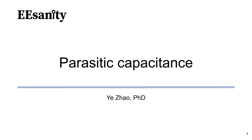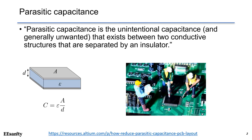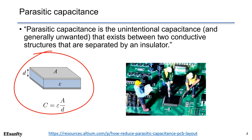In this lecture, we will discuss parasitic capacitance. The definition of parasitic capacitance is the unwanted or unintentional capacitance that exists between two conductive structures that are separated by an insulator. As shown in previous lectures, this is a simple illustration of a capacitor with two plates. The capacitance C equals epsilon times A (area) over D, where D is the distance between the two plates and epsilon is the permittivity.